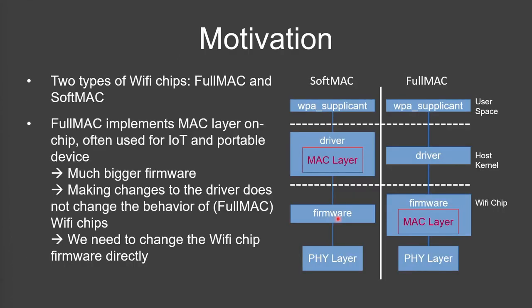In general, there are two types of Wi-Fi chips. The soft MAC — found in your notebook — uses the driver in your kernel to implement the MAC layer. On the other hand, there are full MAC chips where the MAC layer is implemented in the firmware. So if we want to change something in the MAC layer, we directly need to change the firmware instead of the driver. Handling the MAC layer in firmware has the advantage that it's more power efficient, and therefore you will see full MAC chips mostly in IoT and portable devices. Let's focus on full MAC chips for this talk.